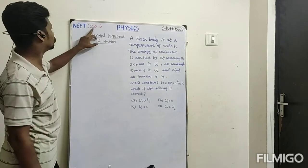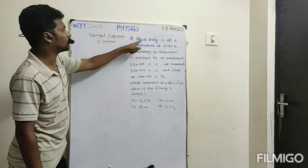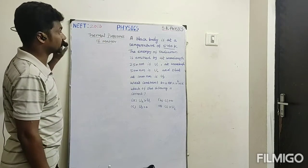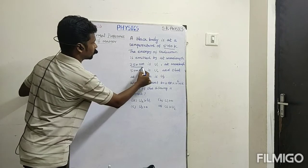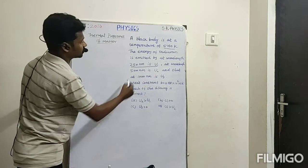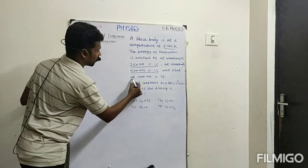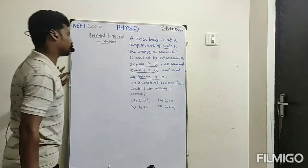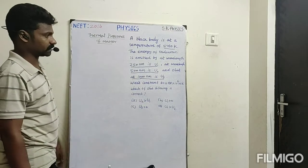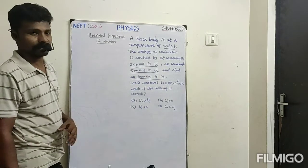Dear students, next question: Heat 2016 JEE exam, from thermal properties of matter. The question says a body is at a temperature of 5760 Kelvin. The energy of radiation emitted at wavelength 250 nanometer is taken as U1, at wavelength 500 nanometer is taken as U2, and at 1000 nanometer wavelength that energy is U3. The Wien's constant is given as b = 2.88 × 10⁶ meter·Kelvin. Which of the following options is correct?